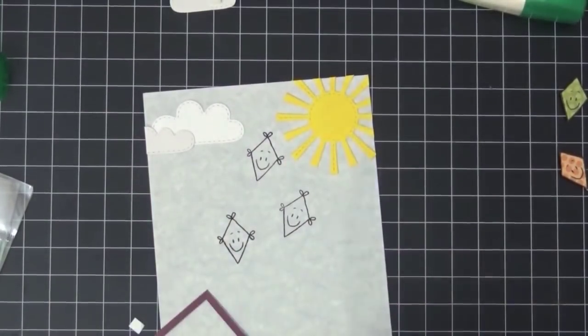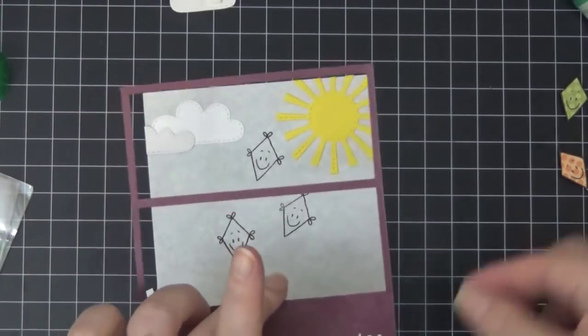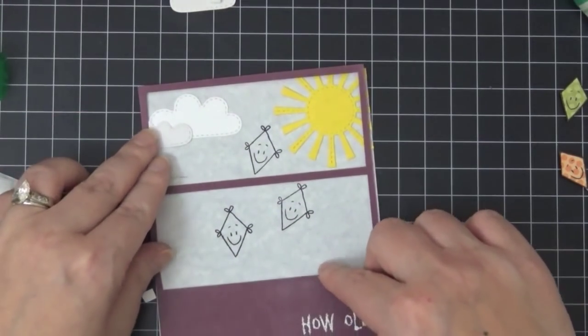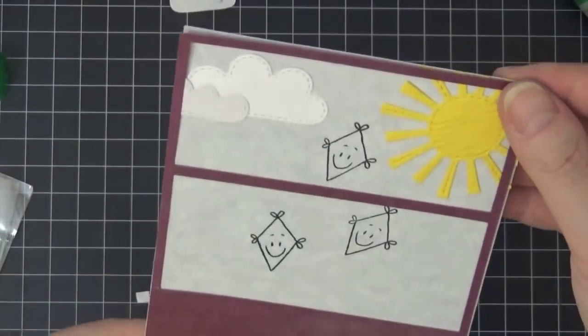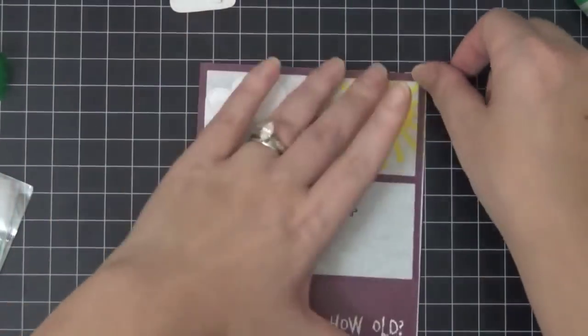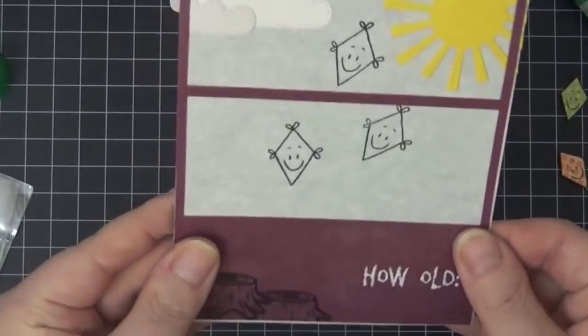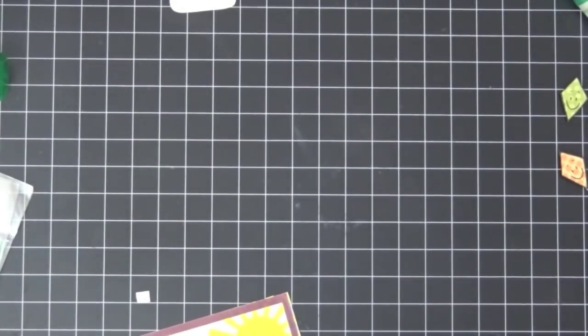So now I'm going to add this panel. I put some ATG at the bottom, but for the frame part I'm using my Tombow Liquid Glue because it's a very fragile frame. So I'm making sure it's lined up perfectly, and I'm going to cut off that little bit that's hanging off on the sides.